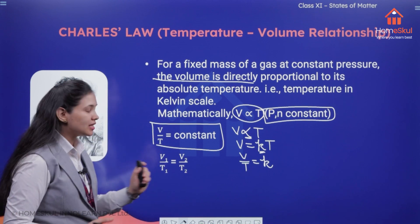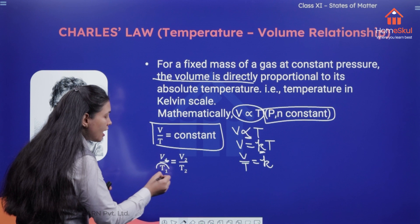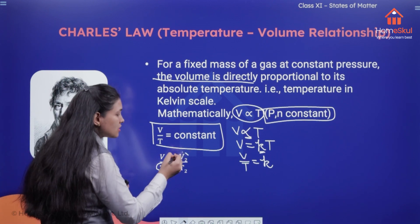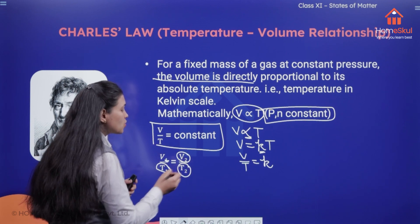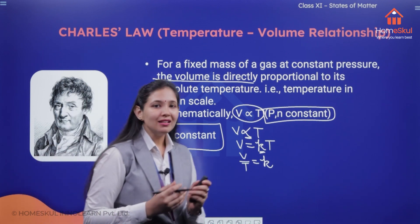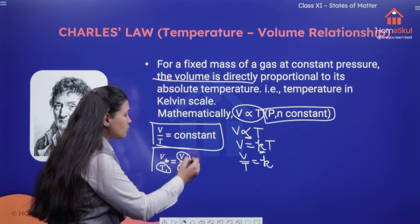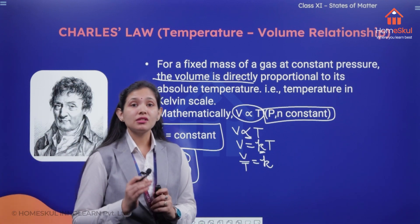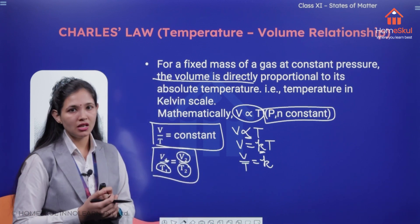And here you can see for a gas having initial volume V1 and initial temperature T1, and this is V2 that is final volume and T2 is going to be the final temperature. So we can write that is V1 by T1 is going to be equal to V2 by T2. So this is very important formula. You have to remember this.